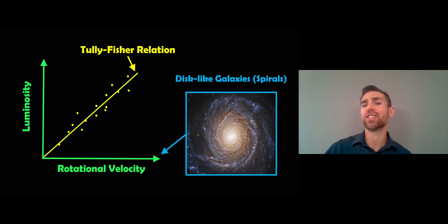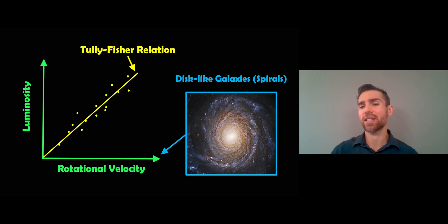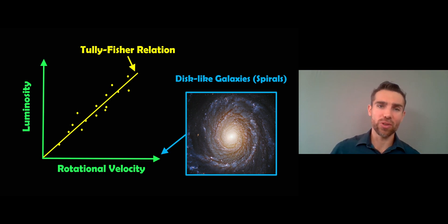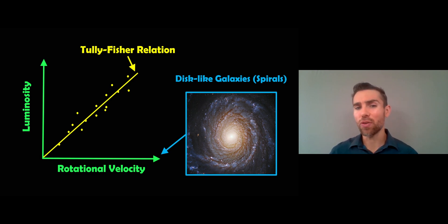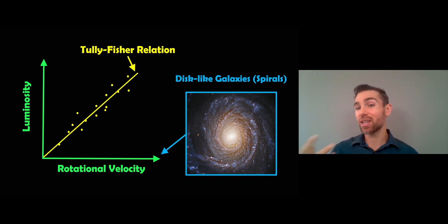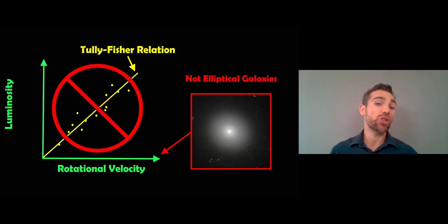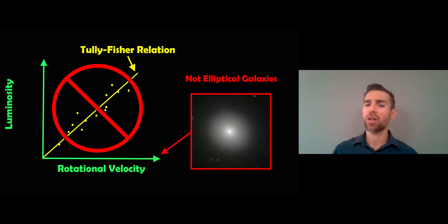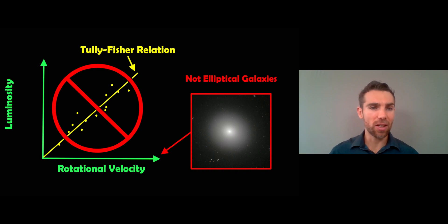The Tully-Fisher relation concerns disk-like galaxies — spiral galaxies, and in some ways lenticular galaxies, though those are a little offset so not exactly the same. It concerns disk-like galaxies like this spiral galaxy here. It doesn't concern elliptical galaxies generally because they don't have the same sort of rotational structure. Elliptical galaxies are more spherical in shape, not disk-like and not rotating like a disk.